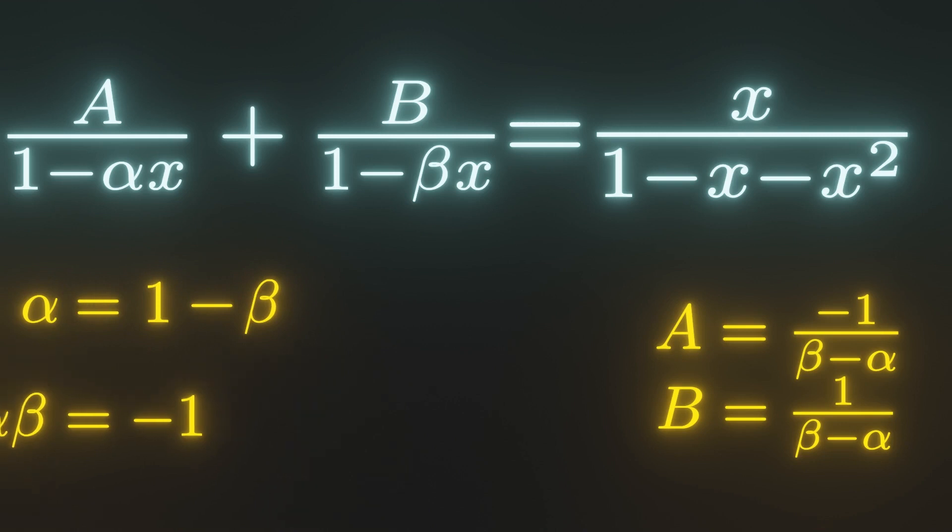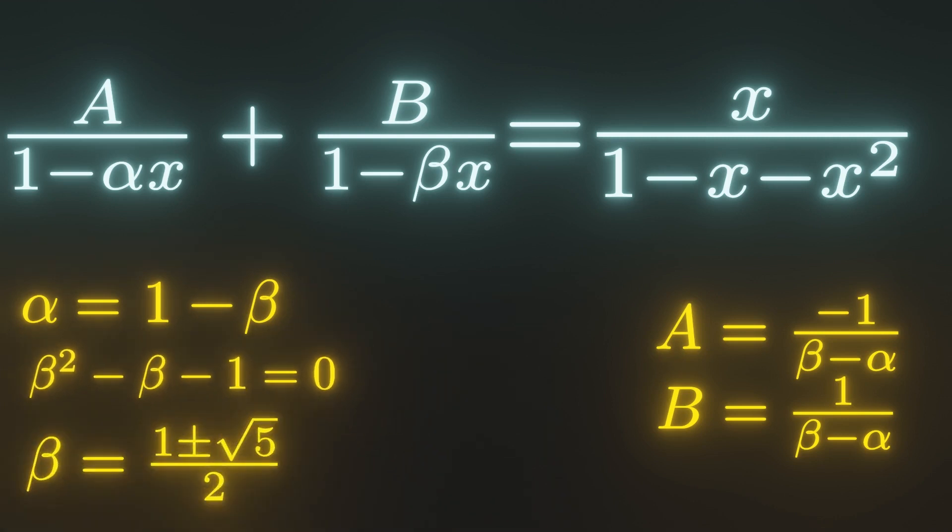Then, after expanding, we get a quadratic in terms of beta. We can use the quadratic formula to get that beta is equal to 1 plus or minus the square root of 5 over 2.